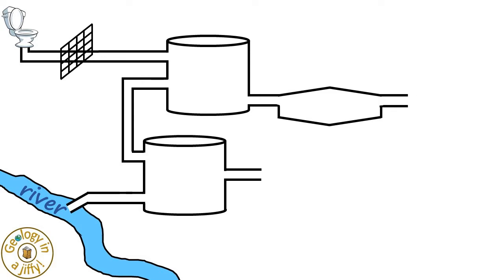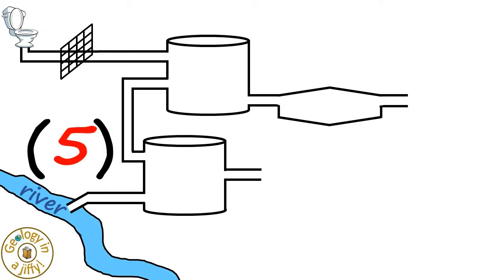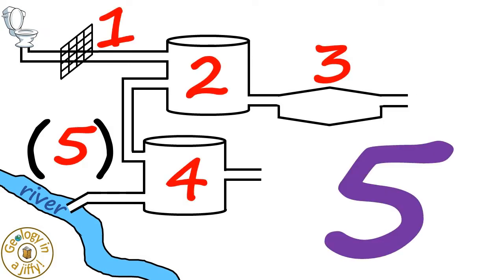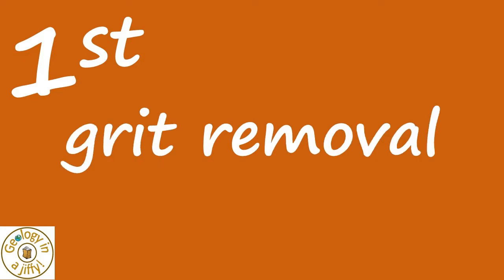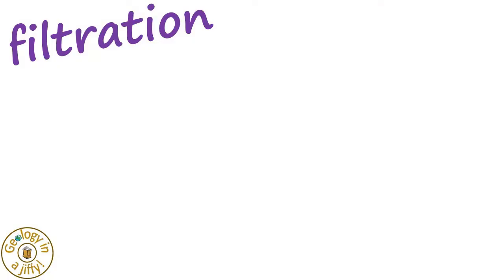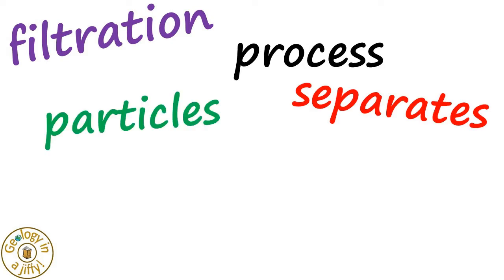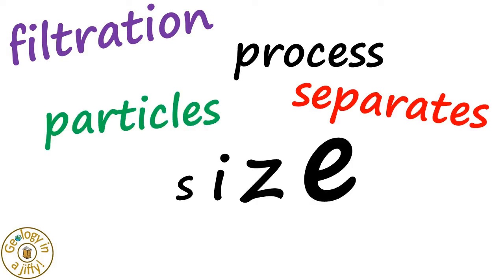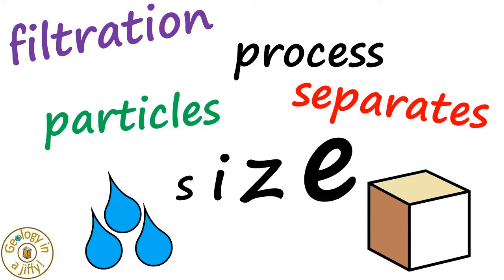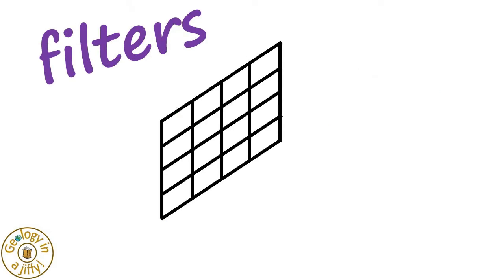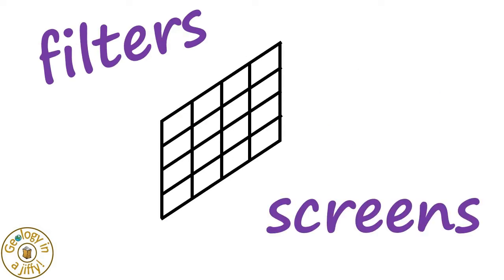The waste water travels around a network of interconnected pipes in one, two, three, four and maybe five different stages. The first stage is screening, also known as grit removal. Filtration is used here — a process that separates particles by their size, or separates solids from liquids, using a series of filters or screens with different sized holes.